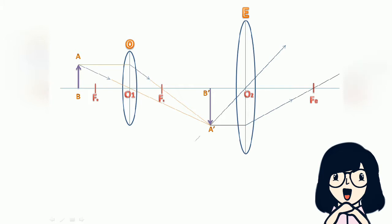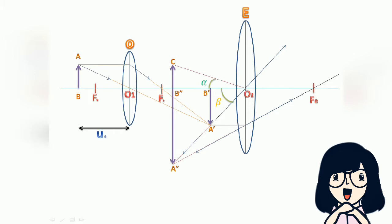The position of the eyepiece is adjusted so that image A'B' falls between its focus and optical center. The final image A''B'' is formed at the least distance of distinct vision, which is erect with respect to the image A'B' of the objective lens, and inverted with respect to object AB. In this ray diagram, the distance of object AB is U0 from the optical center of the objective lens; the distance of A'B' is UE from the optical center of the eyepiece; the distance of A''B'' is D from the optical center of the eyepiece; and the distance of image A'B' is V0 from the optical center of the objective lens.